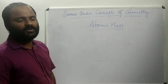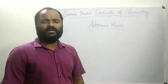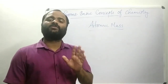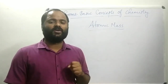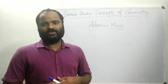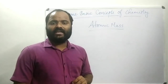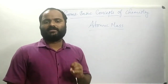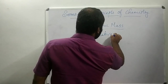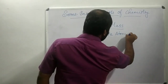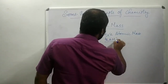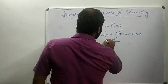Atomic mass — since an atom is very small, the mass of an atom is also a very, very small quantity and it is very difficult to use for calculation. So we have coined a concept named atomic mass, also known as relative atomic mass or RAM (R-A-M).